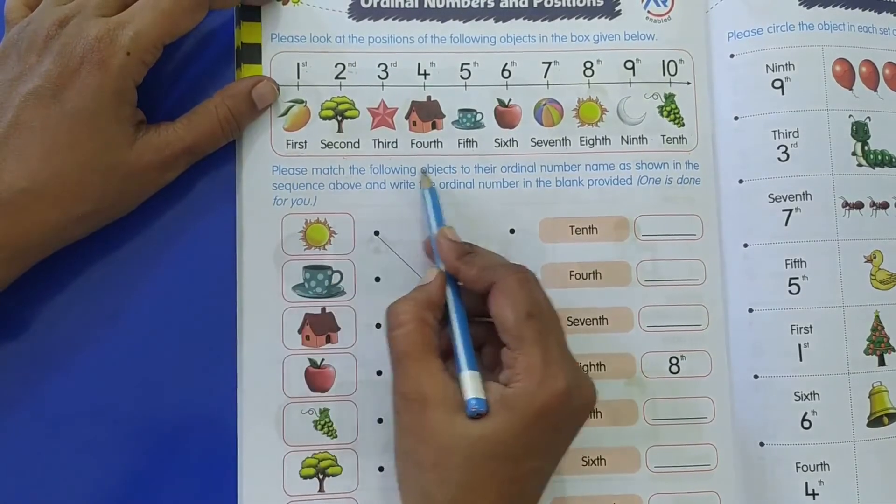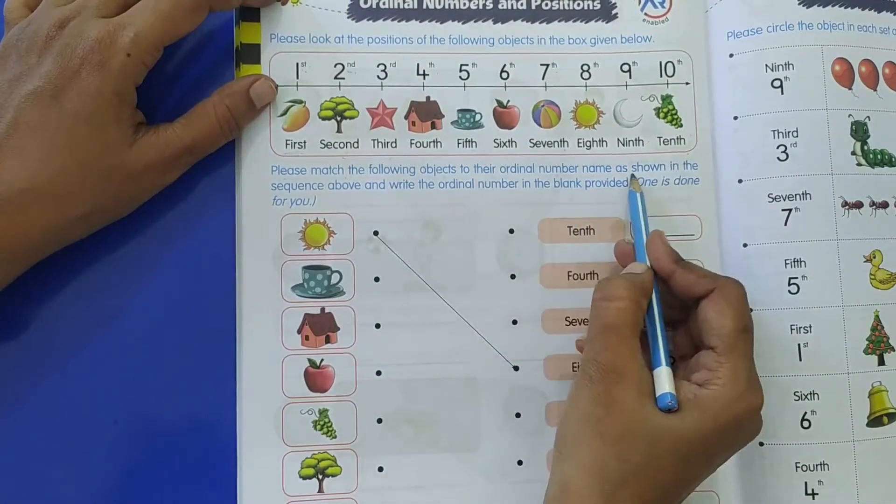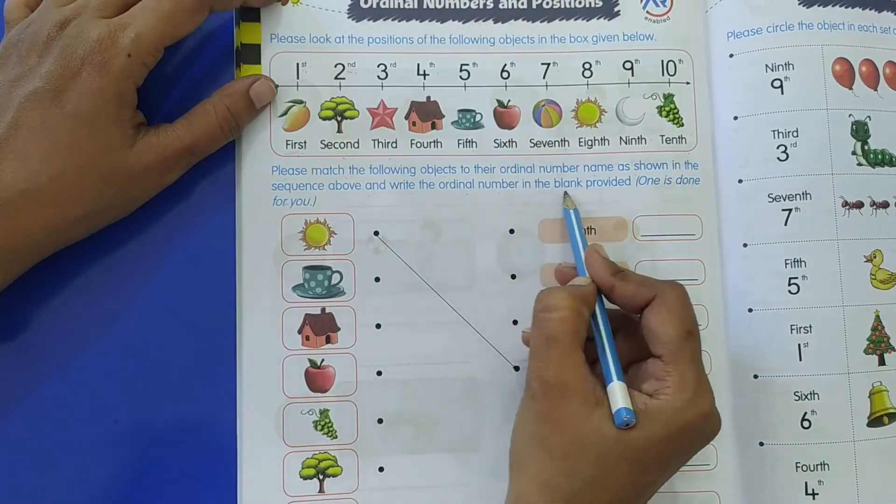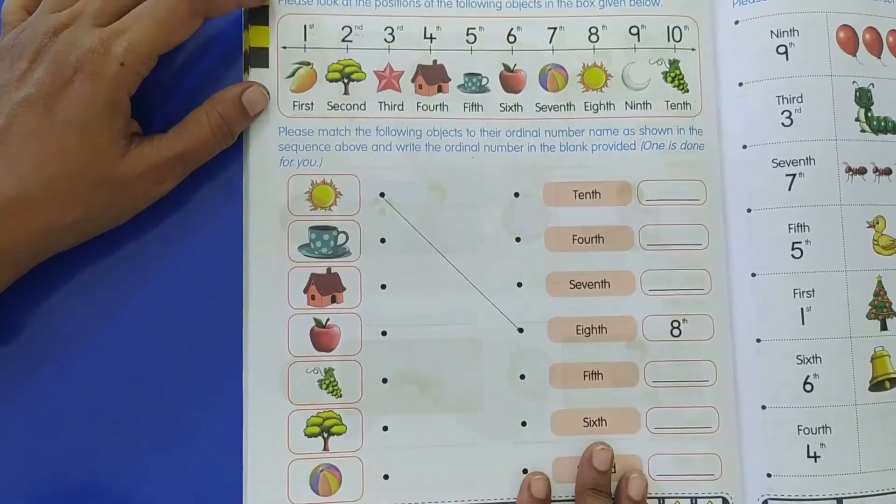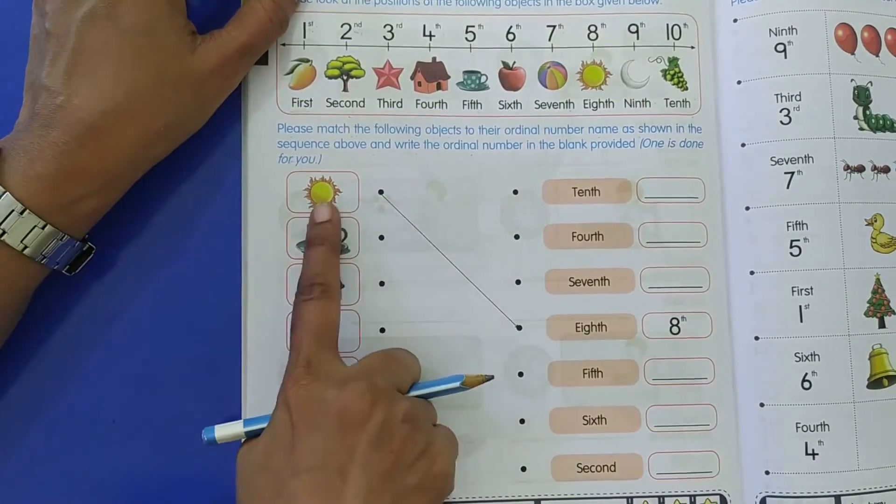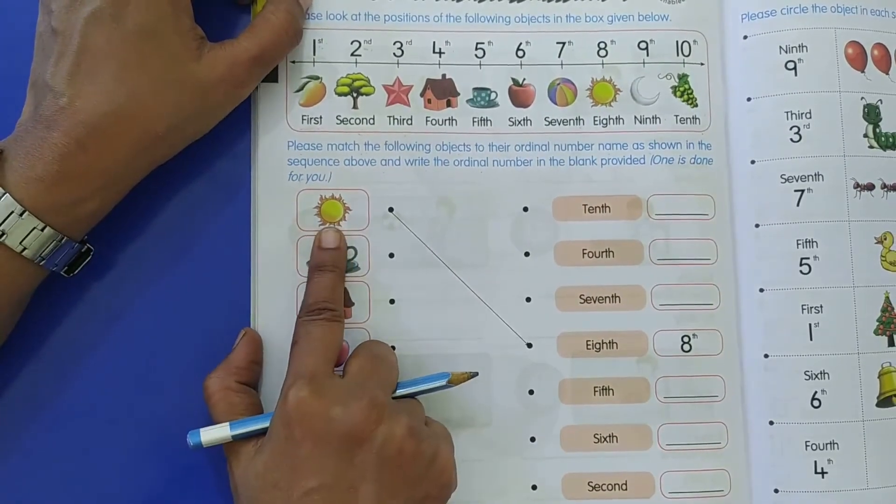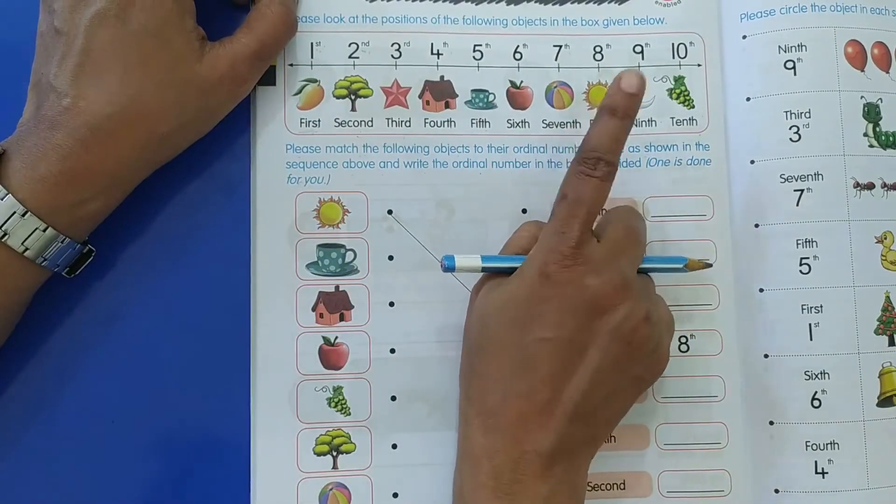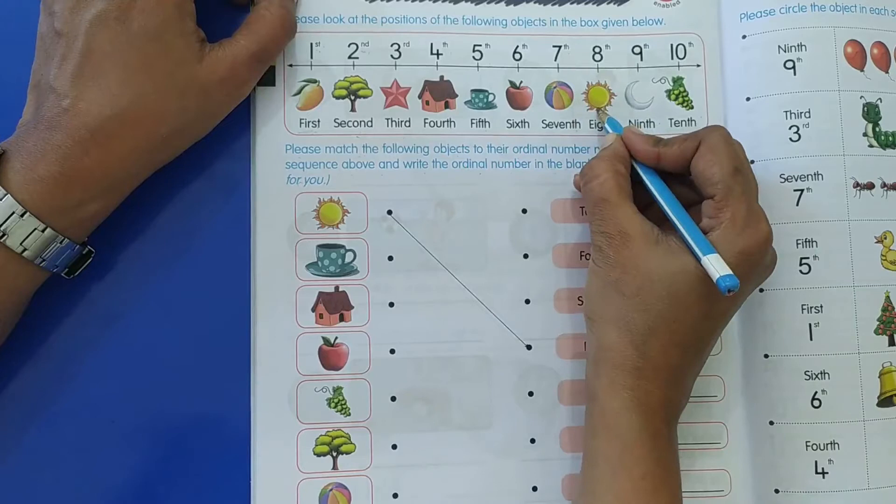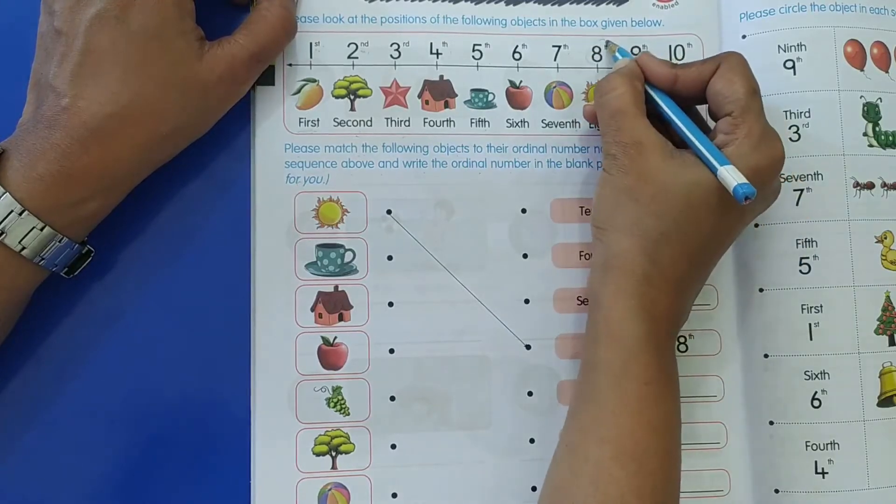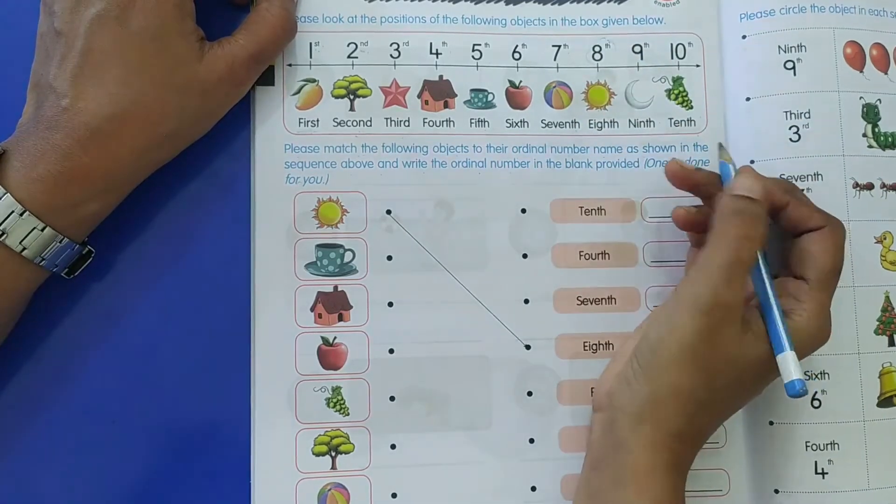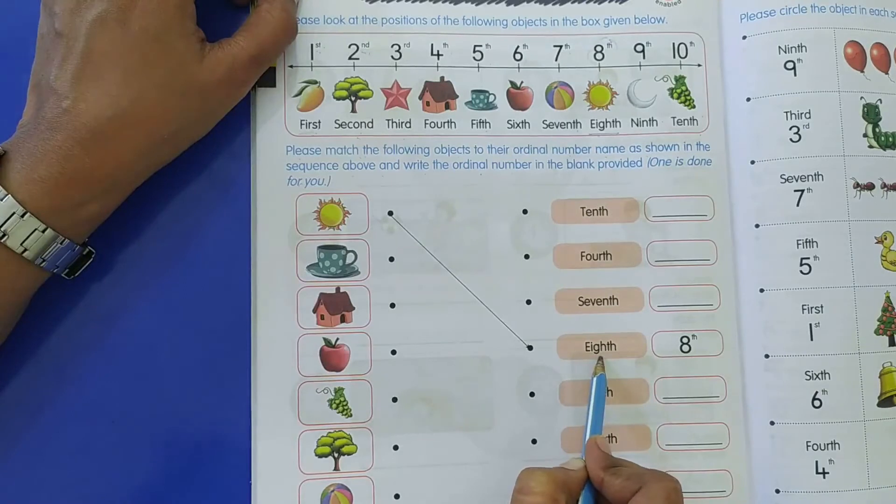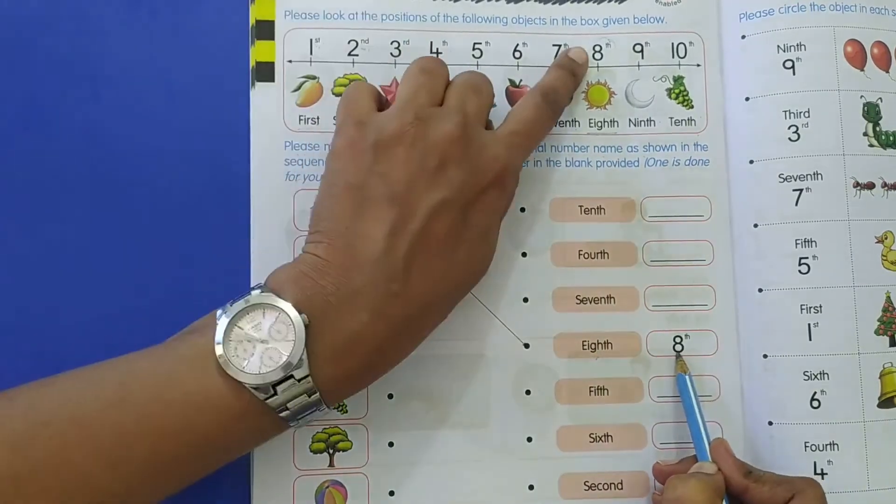Now please match the following objects to their ordinal number name as shown in the sequence above and write the ordinal number in the blank provided. So what we have to do is, we have to see, like first of all, they have given a picture of a sun. Now on this number line, where is the sun? Here is the sun. The sun is at what position? Eighth position. And what is the spelling of eighth? This is the spelling. So you will match sun to eighth and you will write the position, the number here.